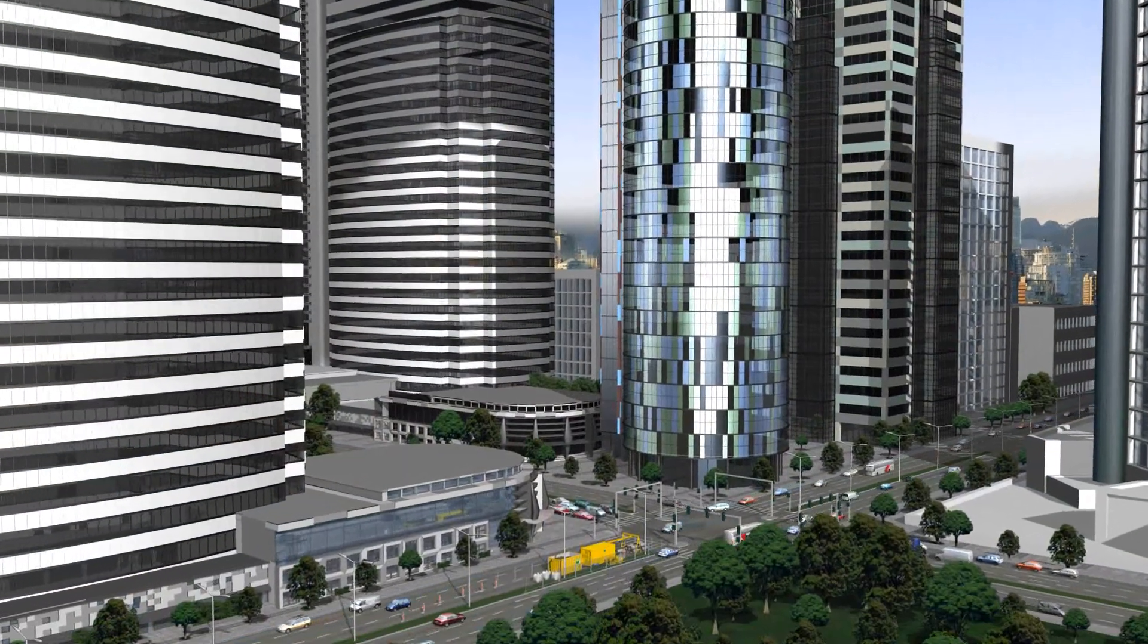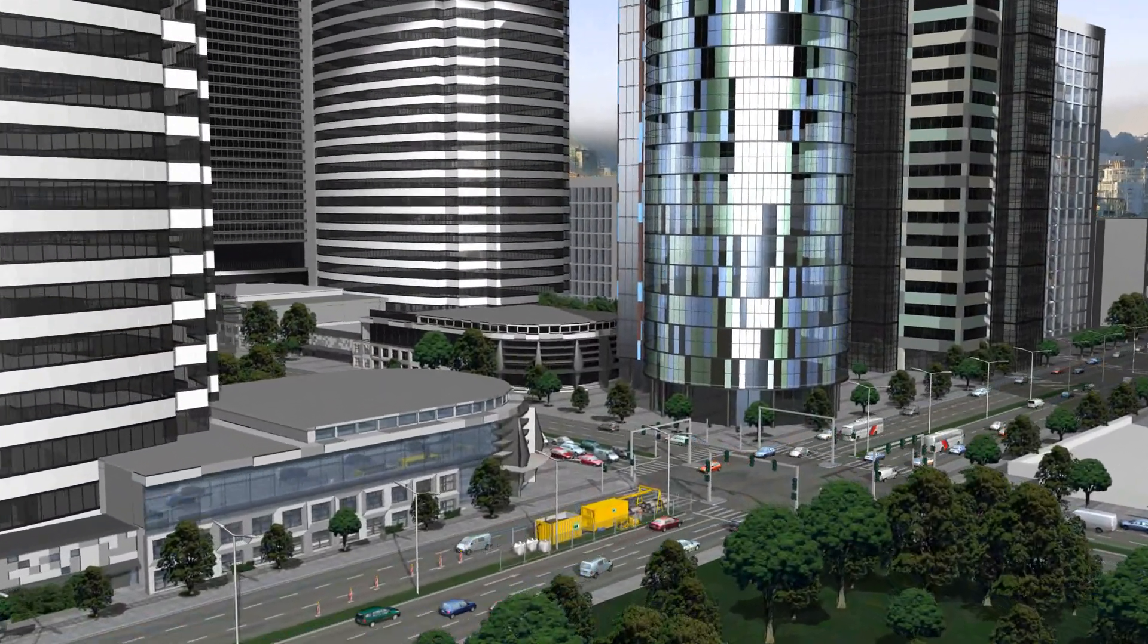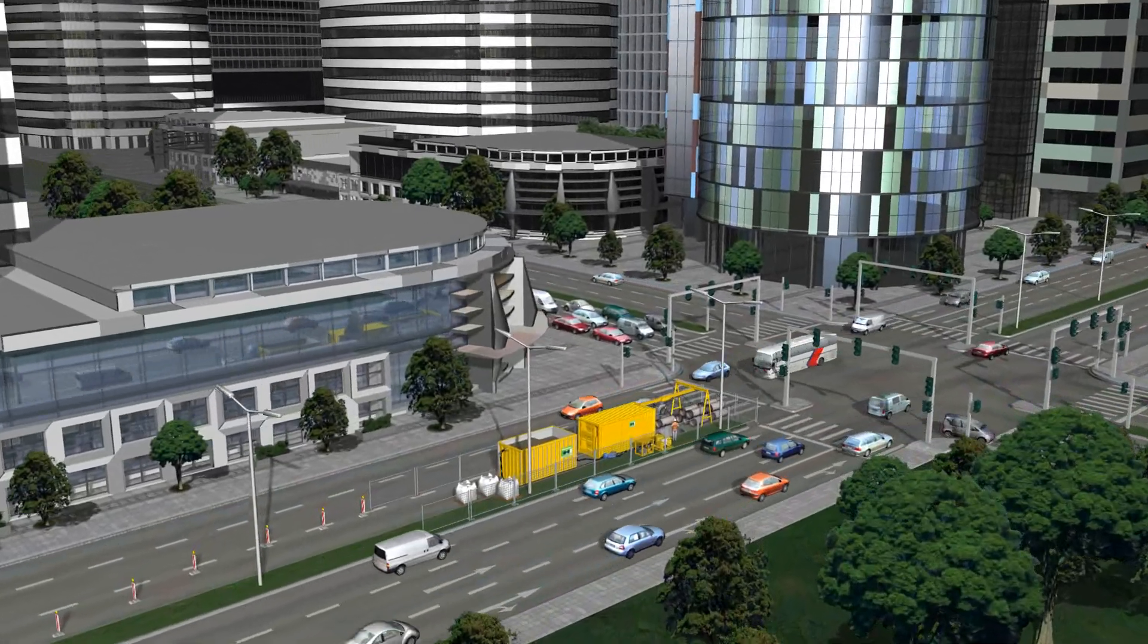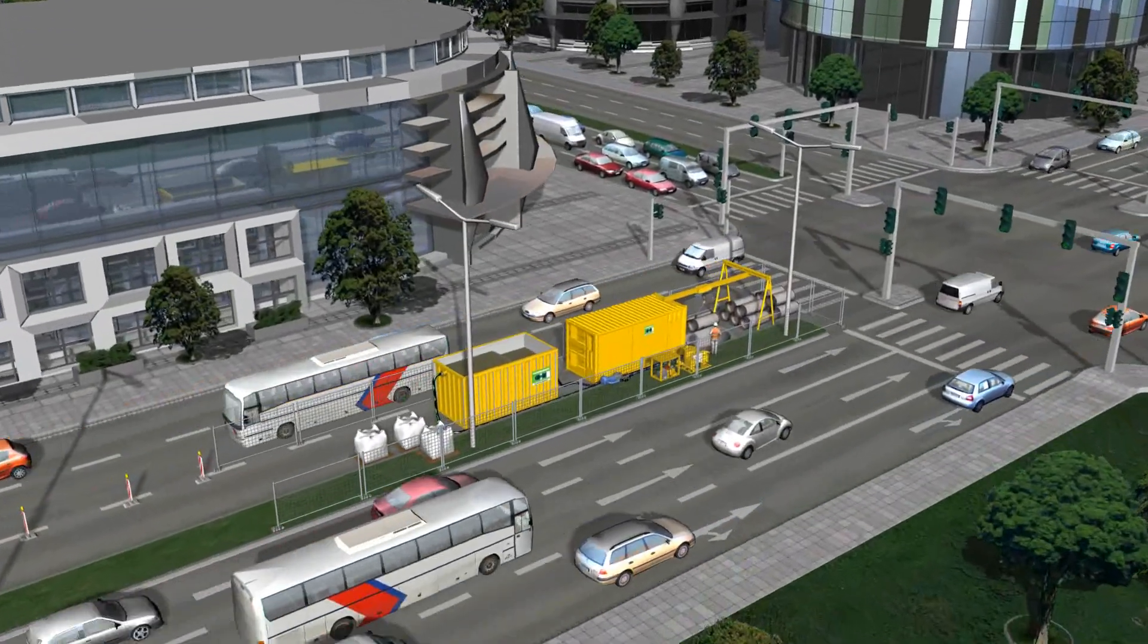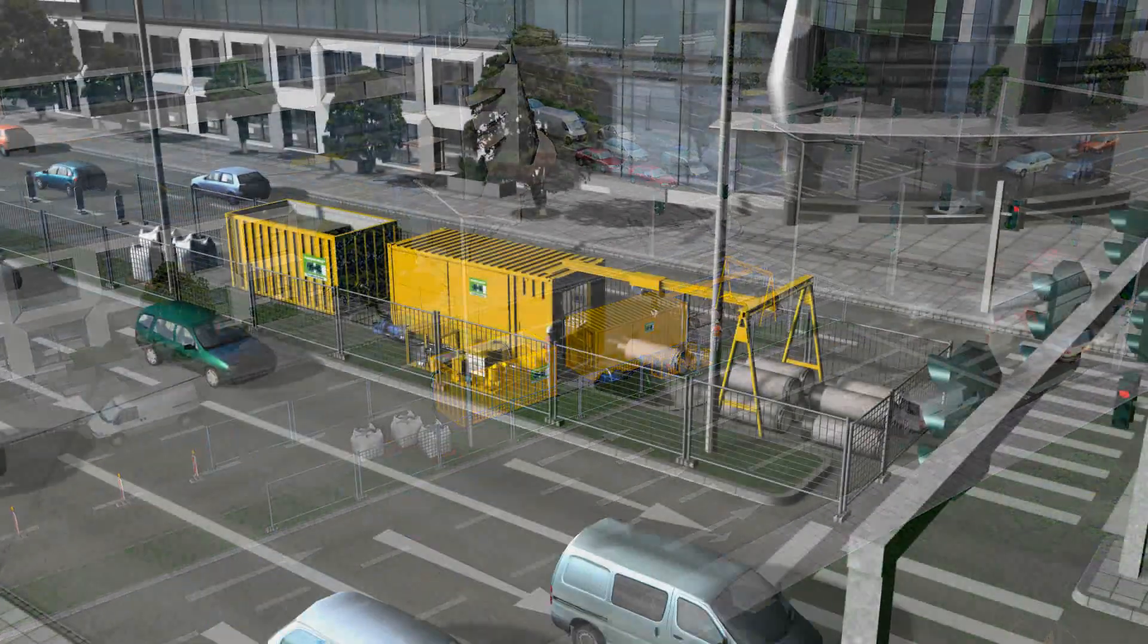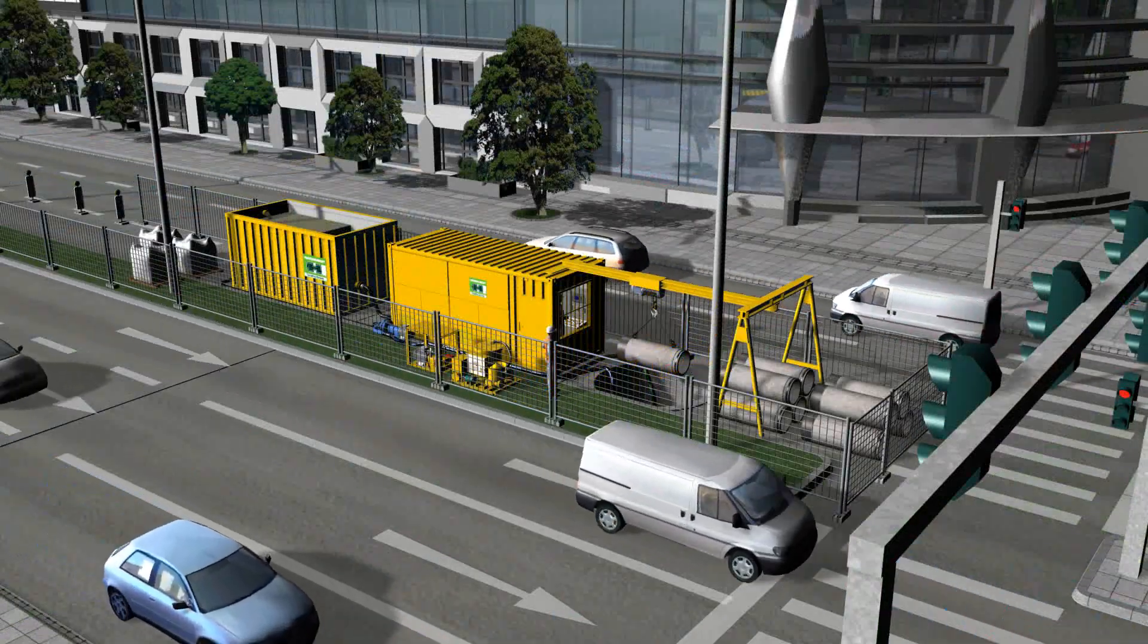The following animation shows the installation of new sewer pipes DN 600 in an urban crossroad with dense traffic. The whole construction site can be located in a way that only one lane is blocked.